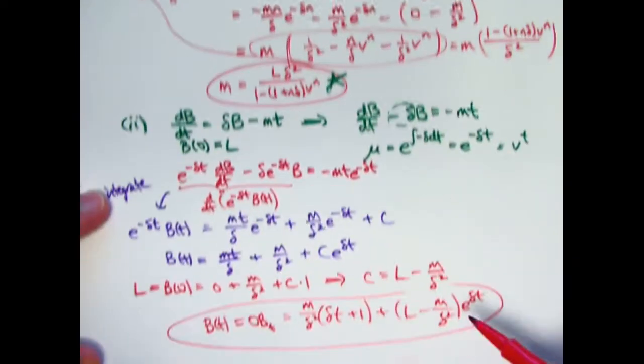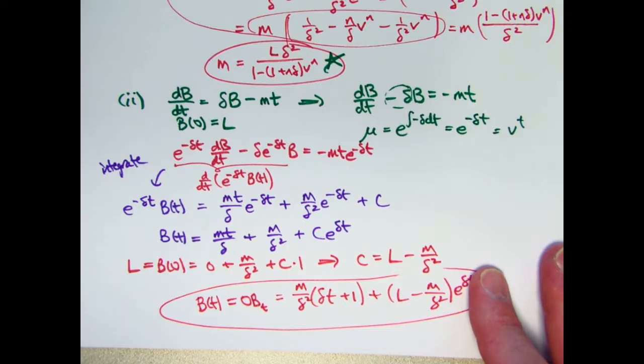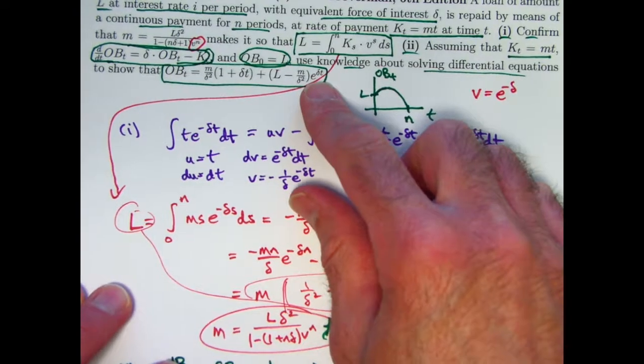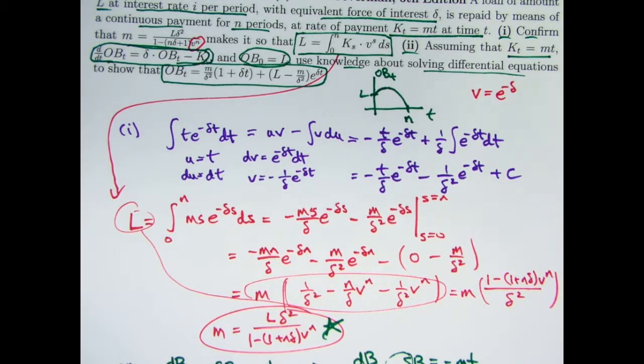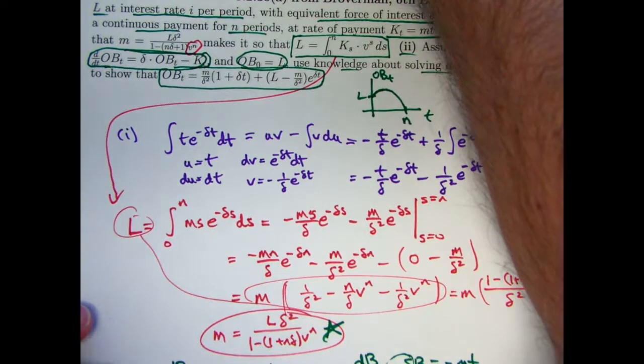Alright. So I think I'll do one more video like this where I will consider another payment stream. And you can consider lots of different payment streams. And maybe you wouldn't get a nice formula for the outstanding balance, but if you've got technology, you should at least be able to graph it. But you always do want this condition to hold. So I think I'll do one more video like this one.